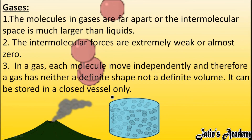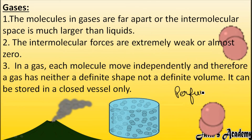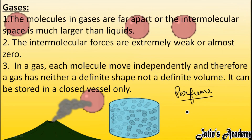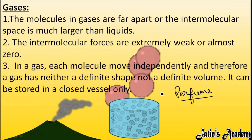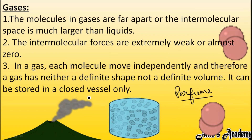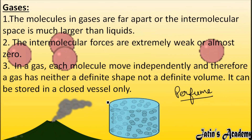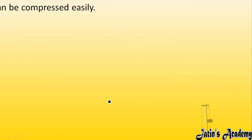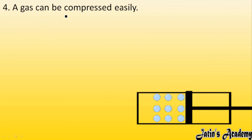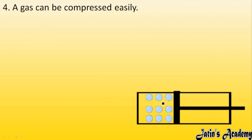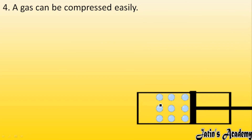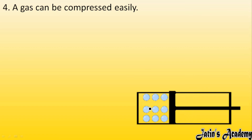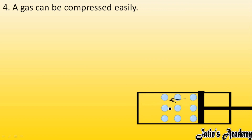A gas can be stored only in a closed vessel. For example, in a perfume or deodorant bottle, gas is filled under a specific pressure — that is an example of storing gas in a closed vessel. Fourth point: a gas can be compressed easily. Since gas molecules are far apart, intermolecular spaces are large and the force of attraction is least, so we can compress gases very easily by applying some pressure.